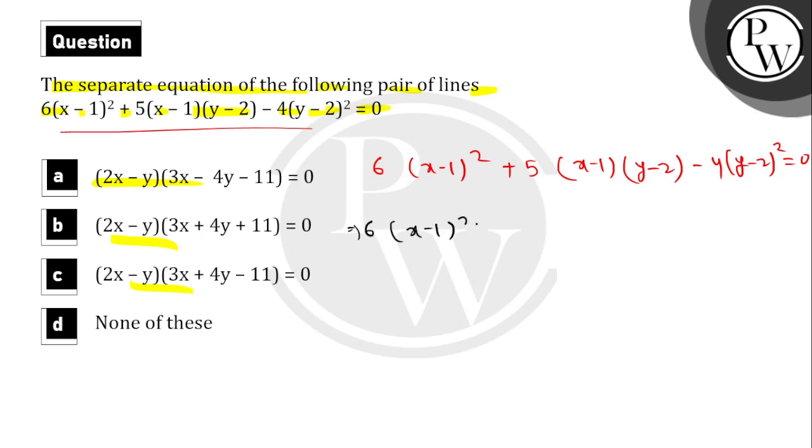We rewrite the equation as: 6(x-1)² - 3(x-1)(y-2) + 5(x-1)(y-2) - 4(y-2)² = 0.